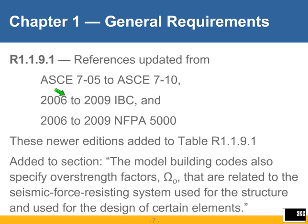In 318.08, there were references to ASCE 7-05, the 2006 IBC, and the 2006 NFPA 5000 code. We have updated the references to ASCE 7-10, the 2009 IBC, and the 2009 edition of the NFPA 5000 code. In addition, in this commentary section, we have added the sentence: 'The model building codes also specify overstrength factors omega sub-zero that are related to the seismic force-resisting system used for the structure and used for the design of certain elements.' We have added this because omega sub-zero is now used in the body of ACI 318-11 for the first time.